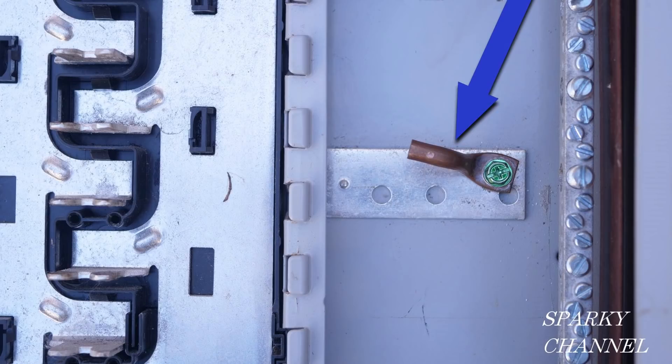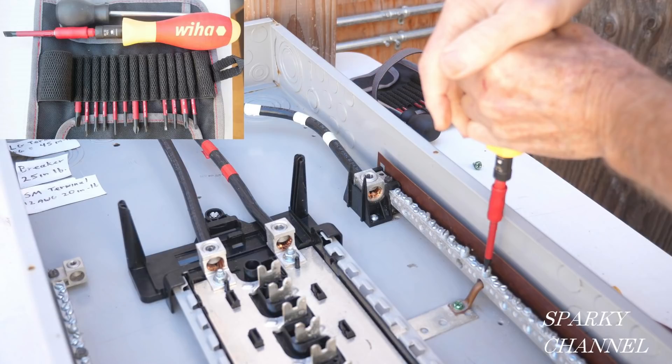If we wanted to use this panel as a sub panel, then we would need to keep the neutrals and the grounds separate. So our bonding strap would not be connected to the neutral bar, or better yet, we would remove the bonding strap to prevent any accidental bonding of the neutrals and the grounds.